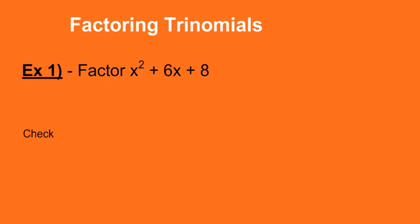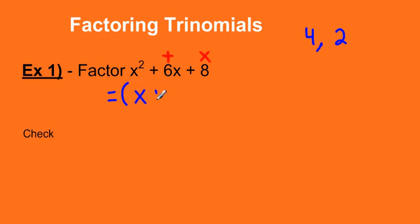Let's look at an example: x squared plus 6x plus 8. Remember, we're looking for two numbers that multiply to give us the last term and add to give us the middle term. So let's think of two numbers that multiply to give us 8 and add to give us 6. Well, 4 times 2 gives me 8, and 4 plus 2 gives me 6. Yes, so those are the two numbers I was looking for — 4 and 2. We're going to write this as x plus 4 times x plus 2.